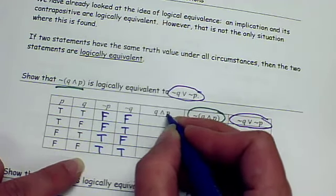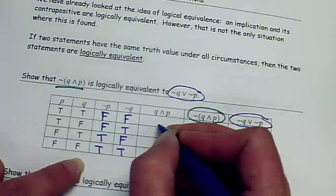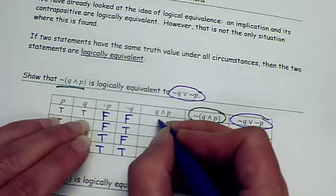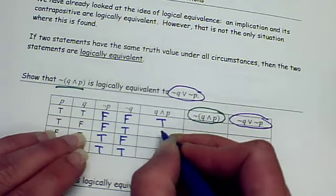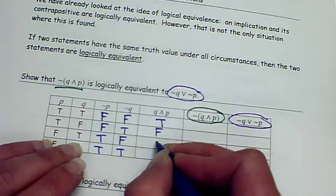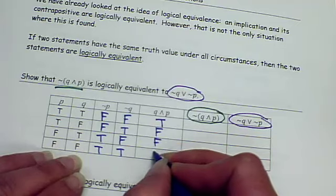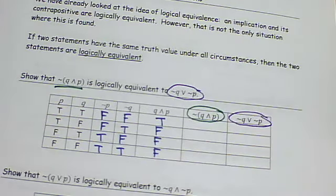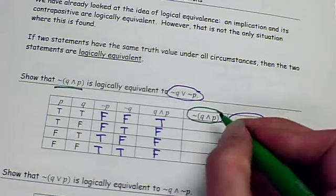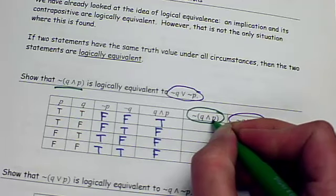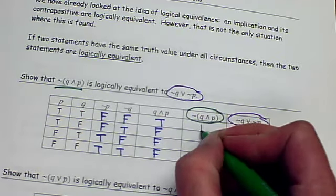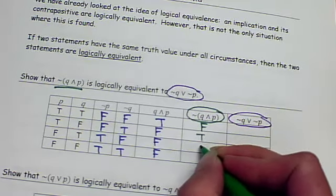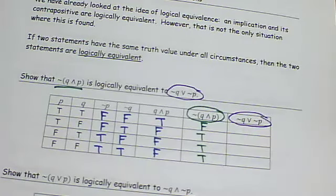Now here we have Q and P. Remember, the and is only true when both are true. So false and true, true and false, false and false. Easy. Now this column, the first one that we are wanting to compare, is the column for not Q and P. So we're supposed to negate the one we just wrote.